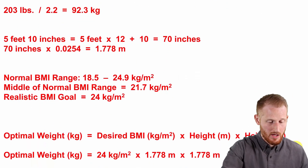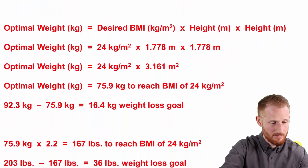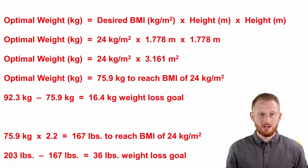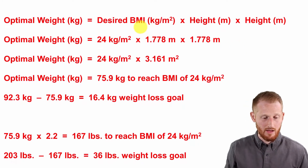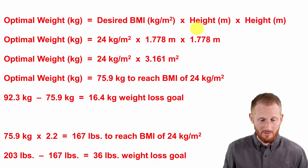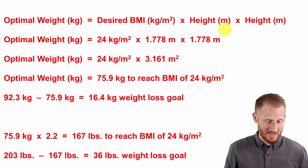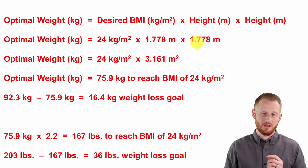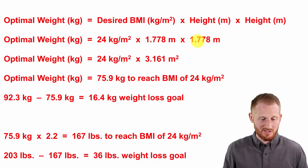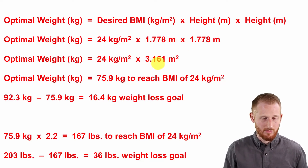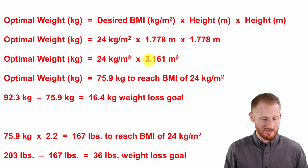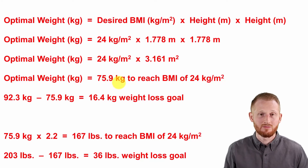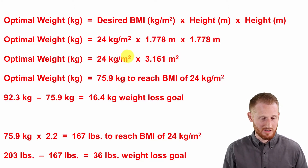Going back to our optimal body weight calculation: desired BMI times height in meters times height in meters again. Filling that in: 24 times 1.778 times 1.778. Squaring the height first gives us 3.161 meters squared. Multiplying 24 by 3.161, the meters squared cancel, and we get 75.9 kilograms.